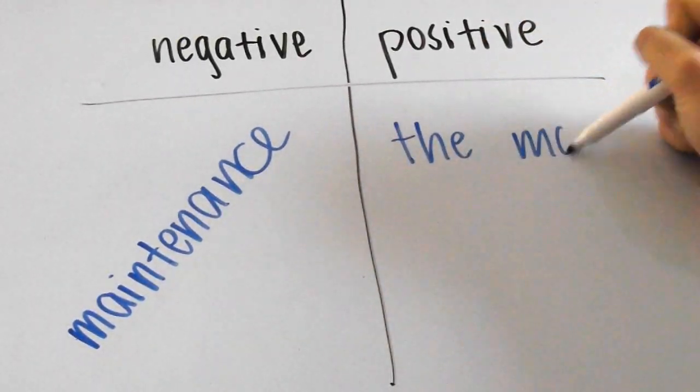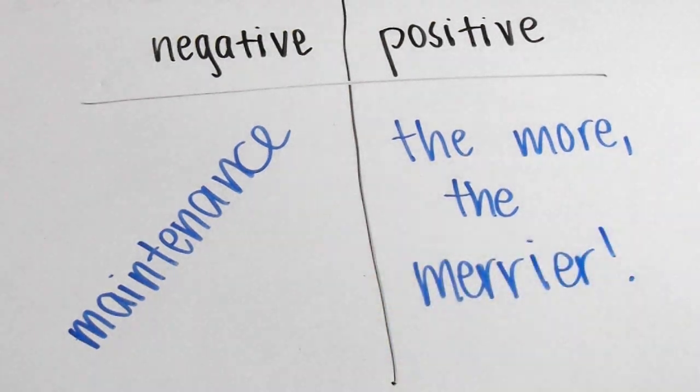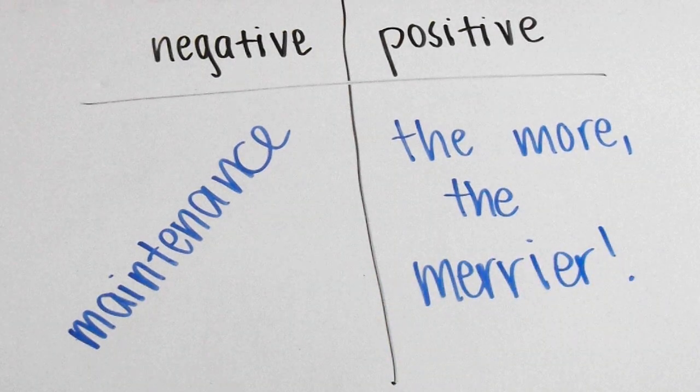Negative feedback loops can be seen as more of a maintenance or regulatory loop. On the other hand, I like to associate positive feedback with the statement, the more the merrier. So let's go and look at some examples.